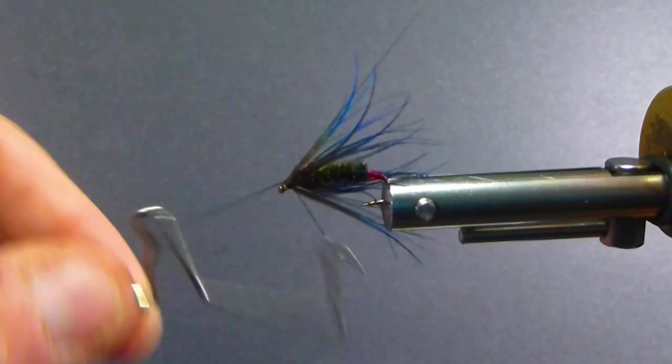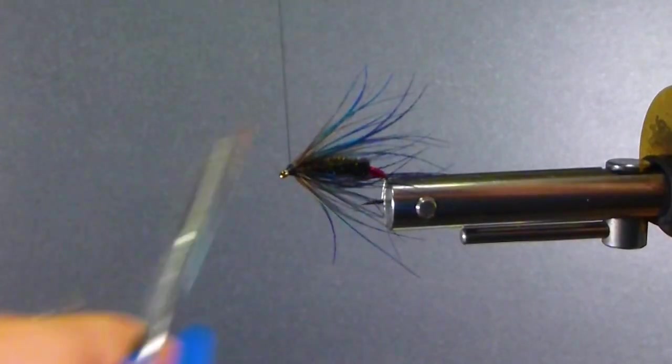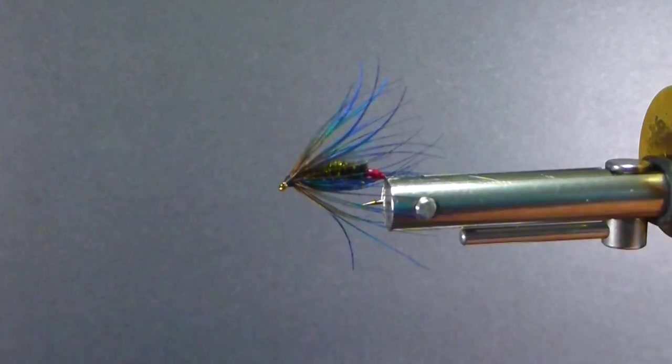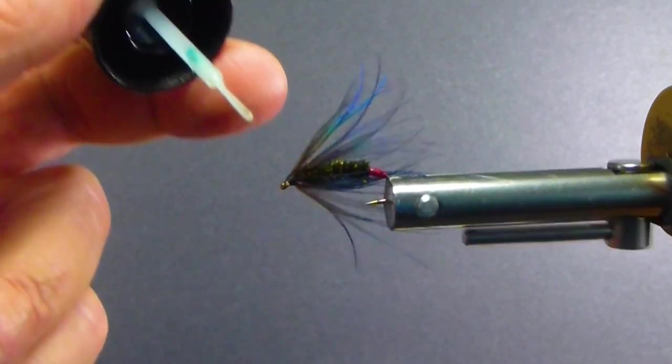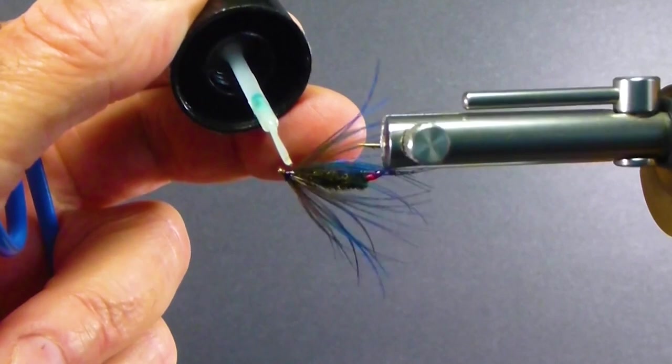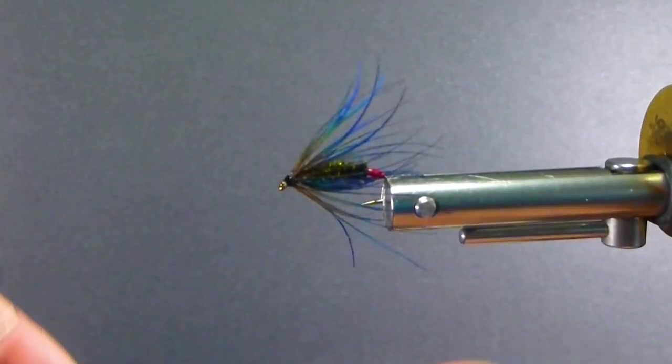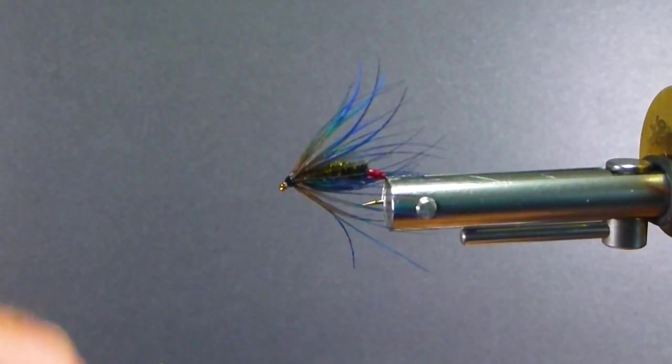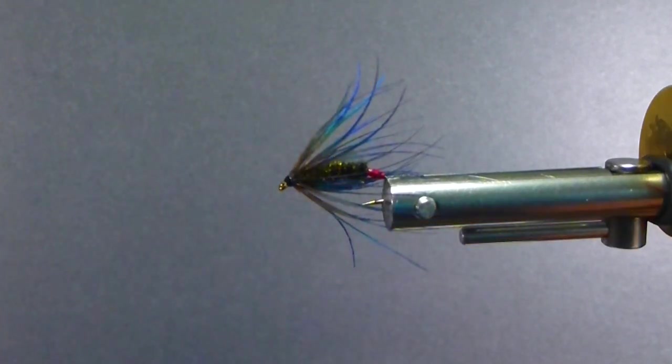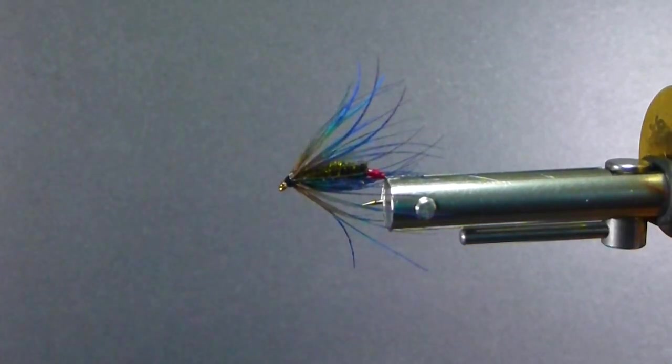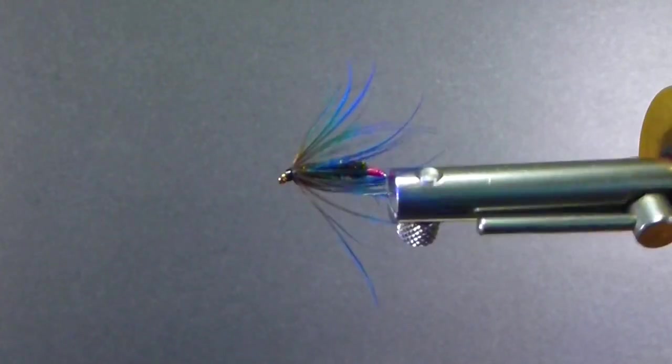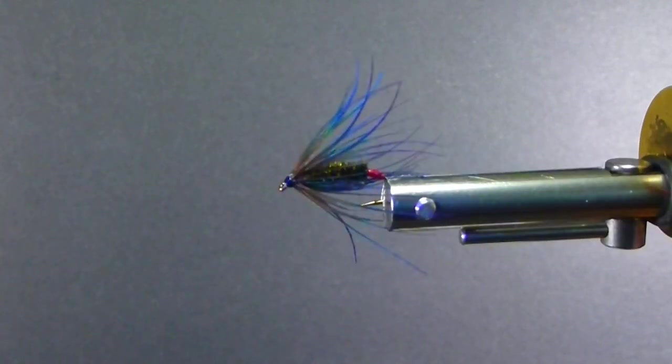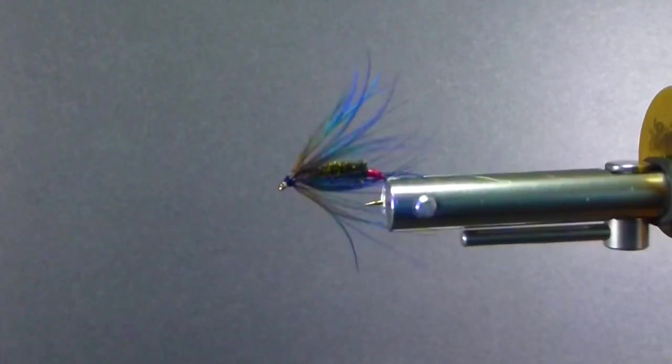Do a whip finish behind the head. Saw that off. Bring in some Solar Res again just for behind the eye. I use a lot of Solar Res. You can use head cement of whatever kind you like, but always cement your flies. It takes a little extra time but it's well worth it. It's a lot easier to do that than have a fly that's fallen apart and you have to re-tie it on. Make sure you've got a lot of these. Your buddies are going to want some and you're going to do quite well with it.